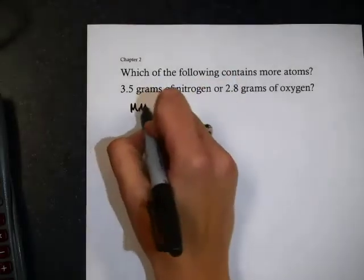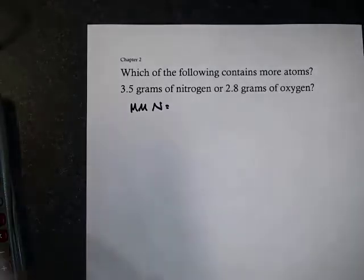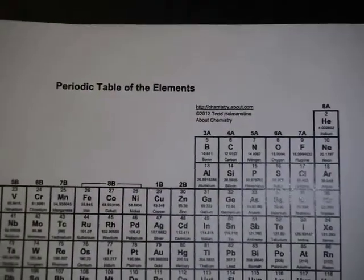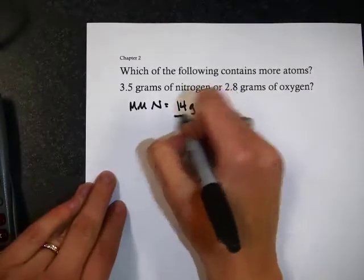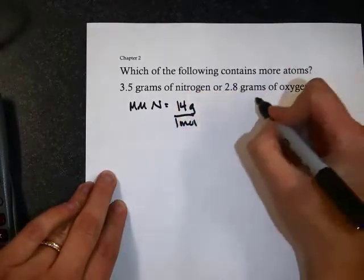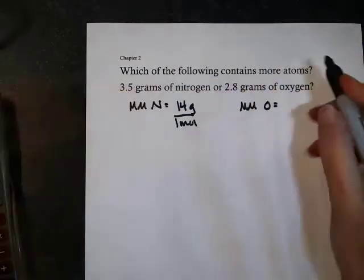I have two different masses here, and I'm looking to see which one has more atoms. So the first thing I'm going to do is check for molar masses of each of my components. Nitrogen is 14 grams per mole. Oxygen is 16 grams per mole. Just getting those from the periodic table.